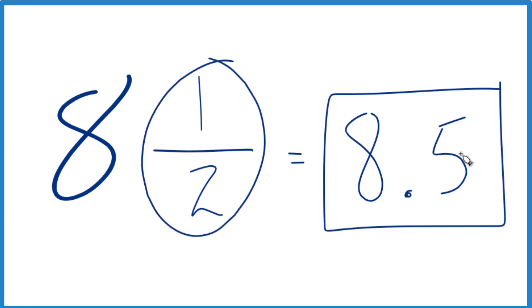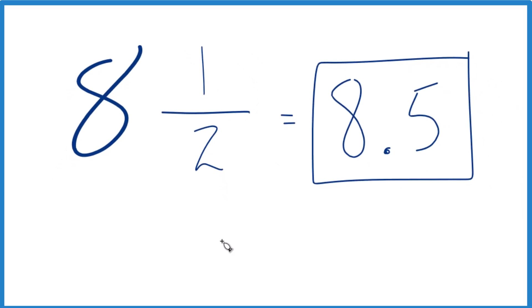But if you didn't know that 1 half was .5, you could also do this. You could divide 1 by 2, so you take 1, you want to see how many times 2 goes into 1.